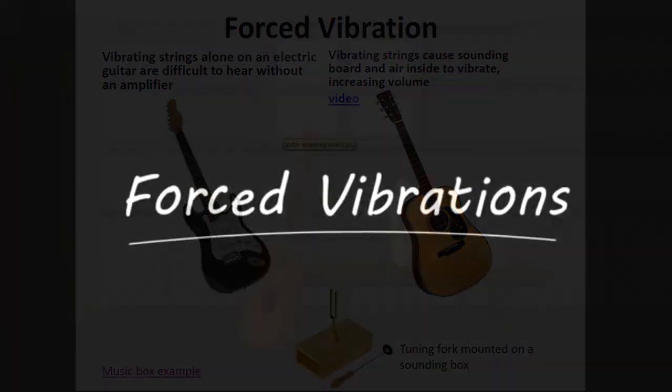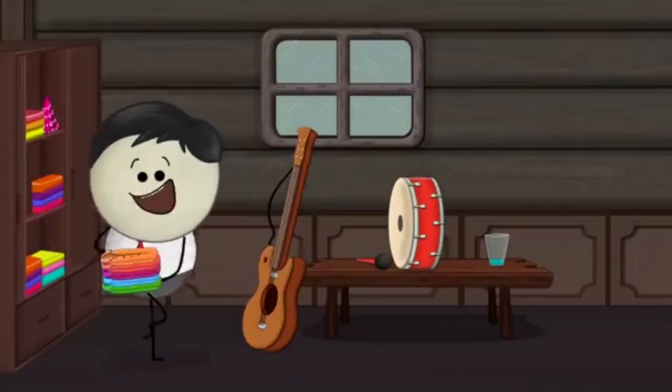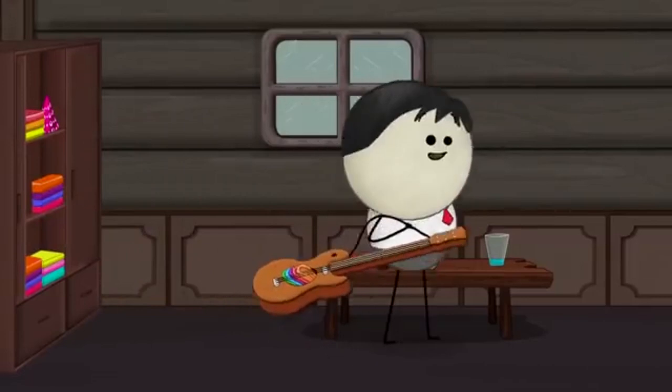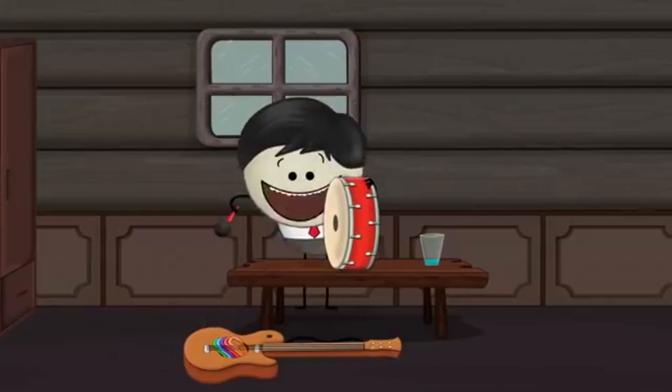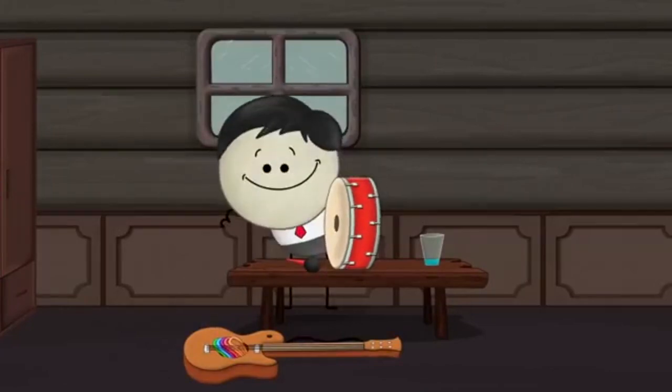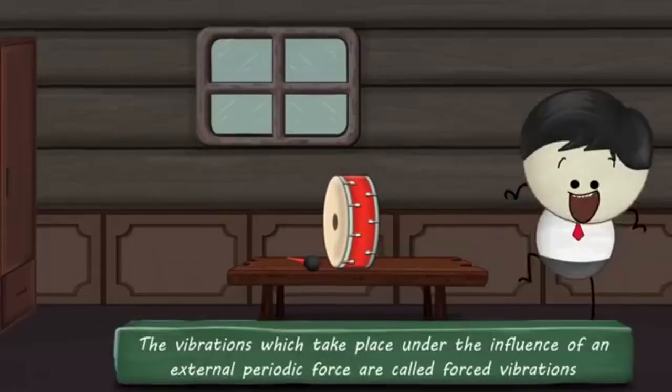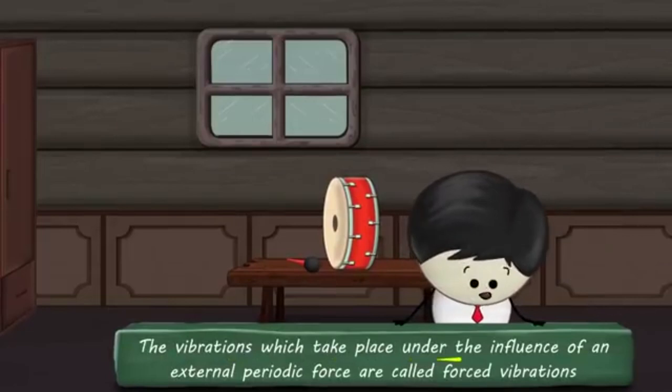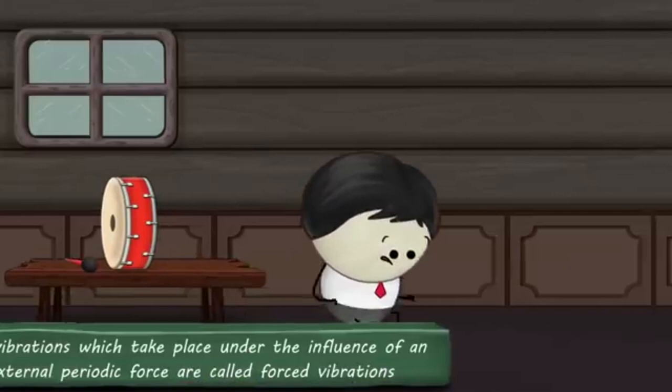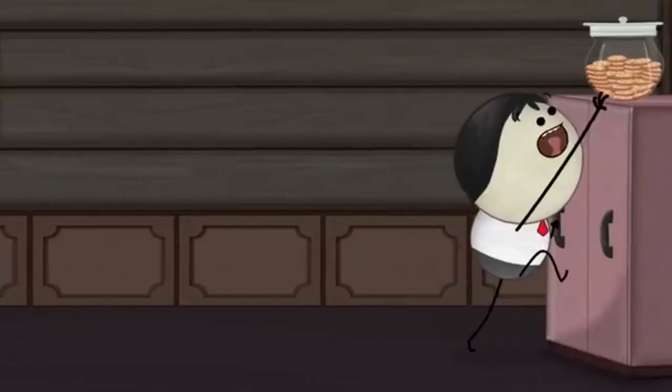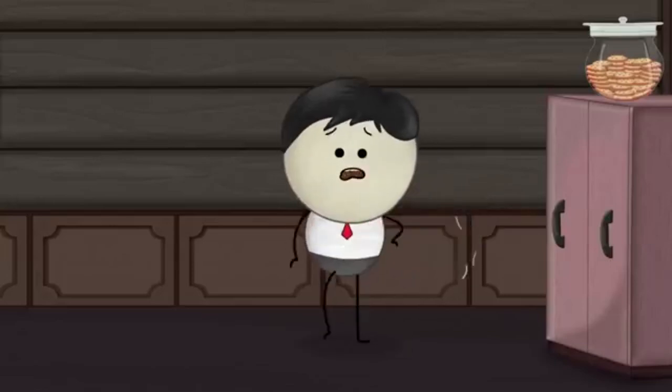Topic: forced vibrations. Why does a guitar have a hollow box? To keep clothes while traveling. Not at all. Wait, I'll explain. Whenever we strike an object, it vibrates. Sometimes, these vibrations influence other objects to vibrate. The vibrations which take place under the influence of an external periodic force are called forced vibrations.